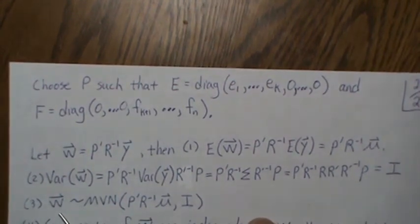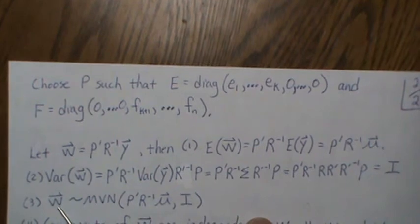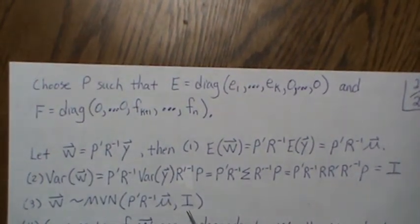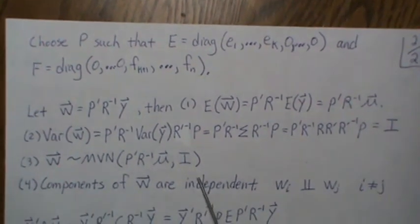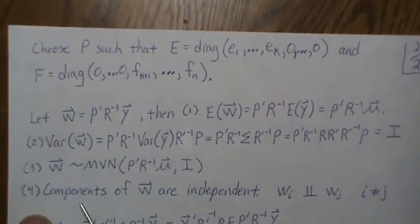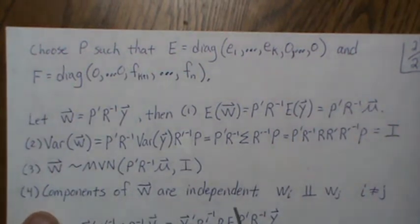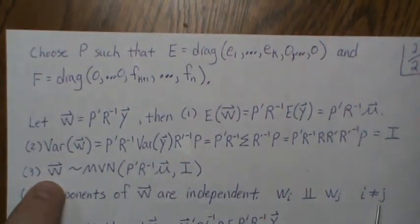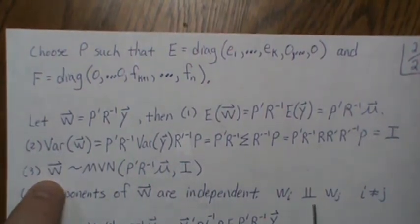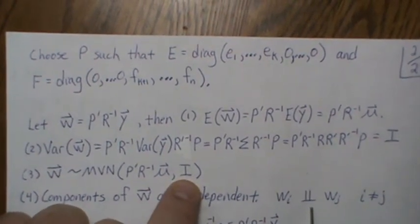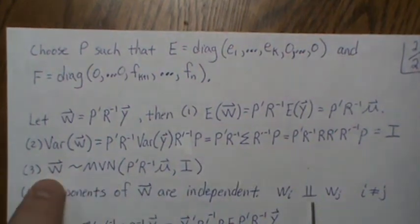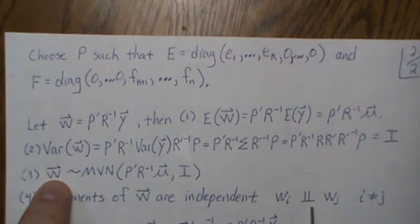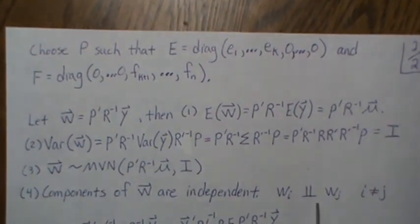So the variance is identity. So we know that W, the vector W, is multivariate normal with this mean and variance covariance matrix I. So now the next big note is that the components of W are independent. So that means the I and J element of W are independent. That's what this sign means here. And we know that because it's the identity matrix. The covariance is zero, and they're normally distributed, so they're independent. So that's another key point there.